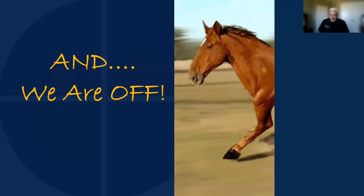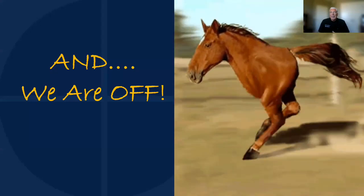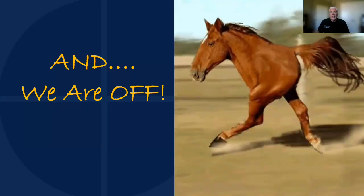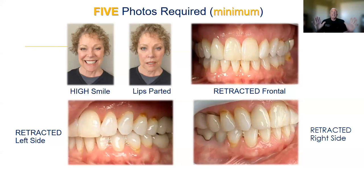Once the five pieces of information are submitted, additional information is often advantageous depending on case complexity — more than the minimum five photos, for example. When capturing photos, aim to frame the patient about two inches outside the ears and two to three inches below the chin and above the forehead. Avoid shooting from six to eight feet away, because zooming in at the laboratory causes loss of clarity, which creates challenges.